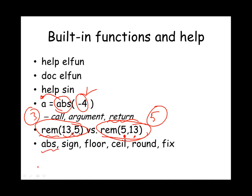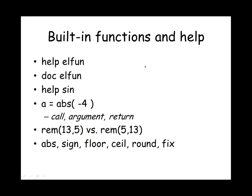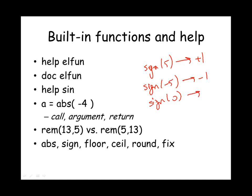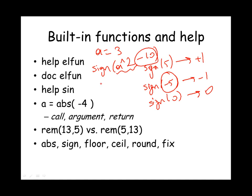There are important mathematical functions to be familiar with. ABS returns the absolute value. The sine function returns the sine of the number, so sin(pi/2) gives 1, sin(-pi/2) gives -1, and sin(0) gives 0. You can provide any valid mathematical expression inside the parentheses. For example, with a equals 3, sin(a^2 - 10) evaluates 3 squared minus 10 which is -1, and sin(-1) gives approximately -0.841.